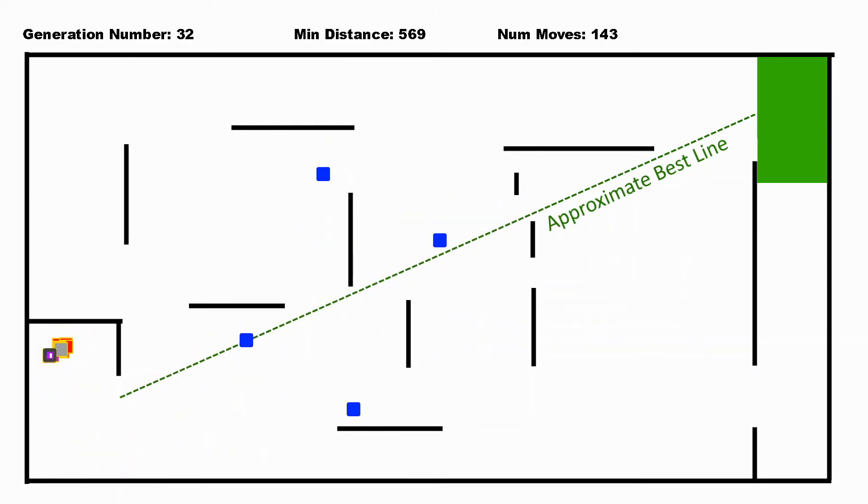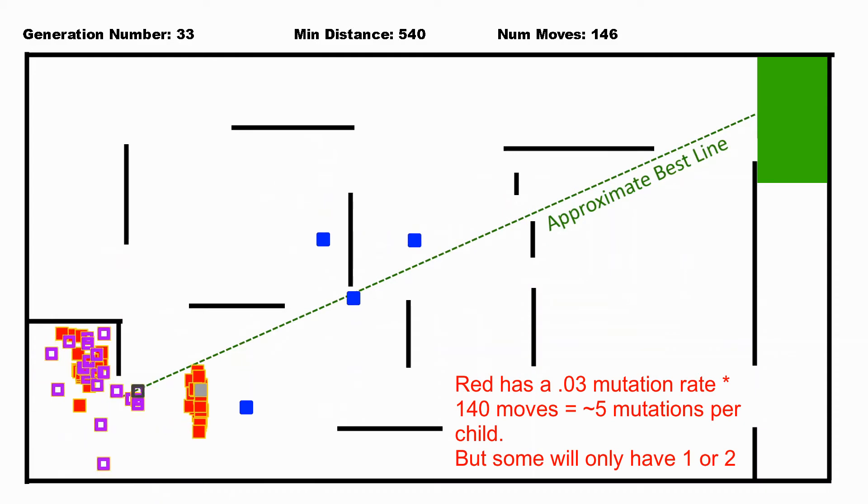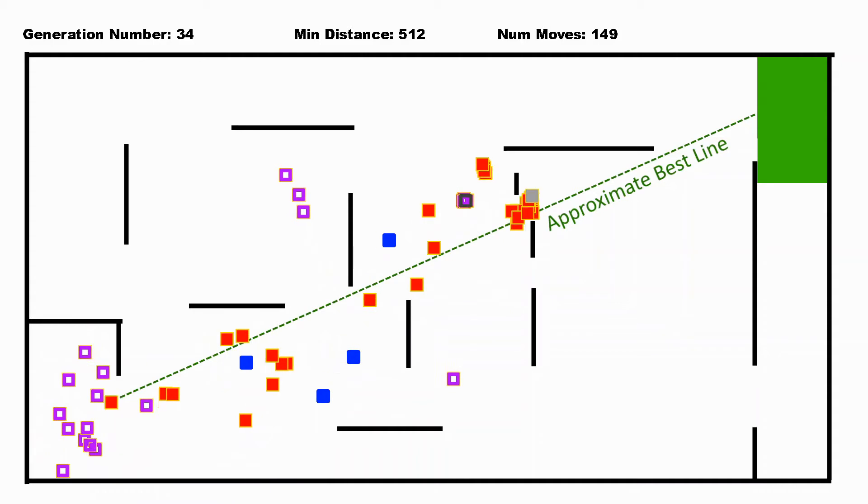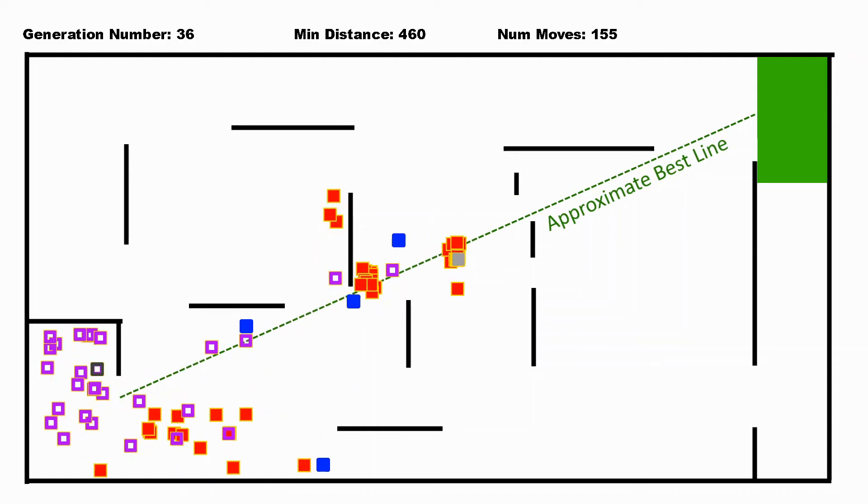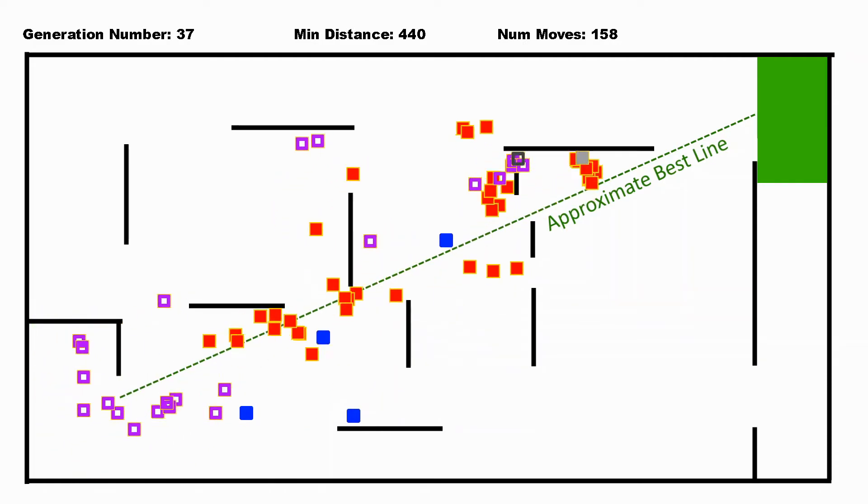But here the mutation rate isn't that high so things are getting passed. So we see a nice clutch of red making it passed each time. Even though a whole bunch of them don't make it out of the start block, you still get 20 red ones who keep making at least some progress each time.